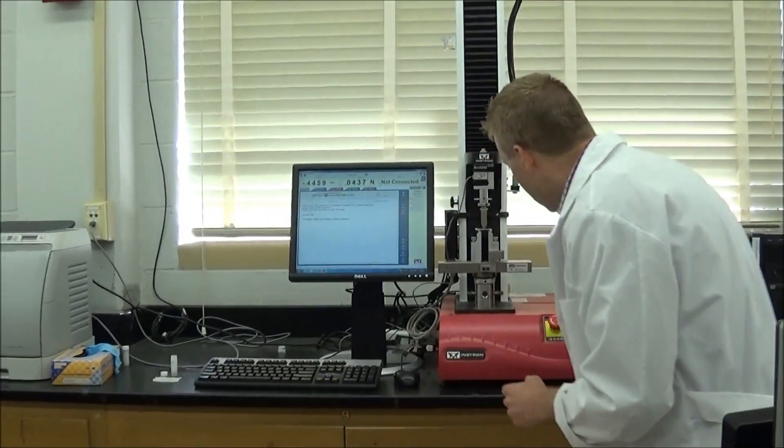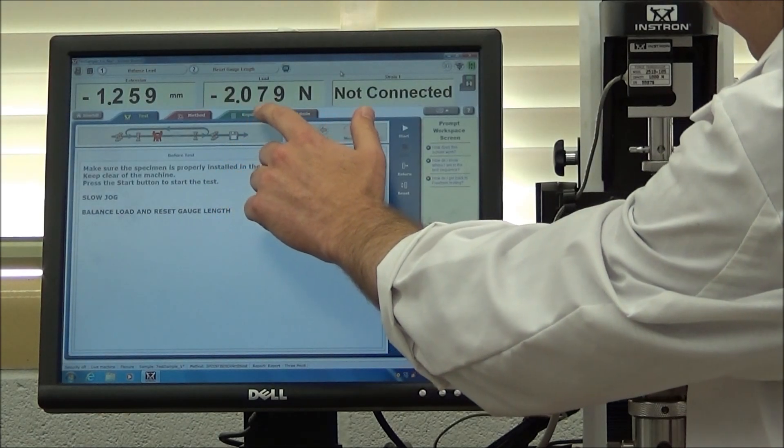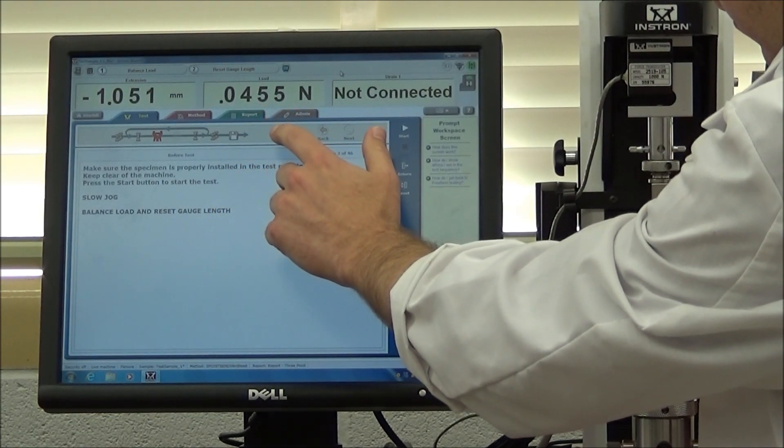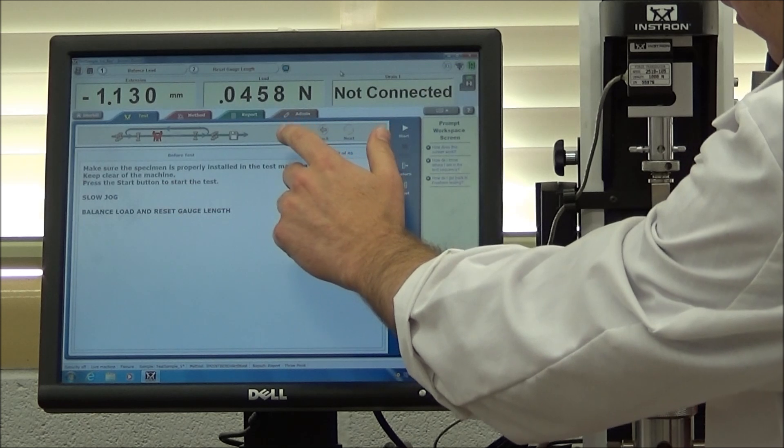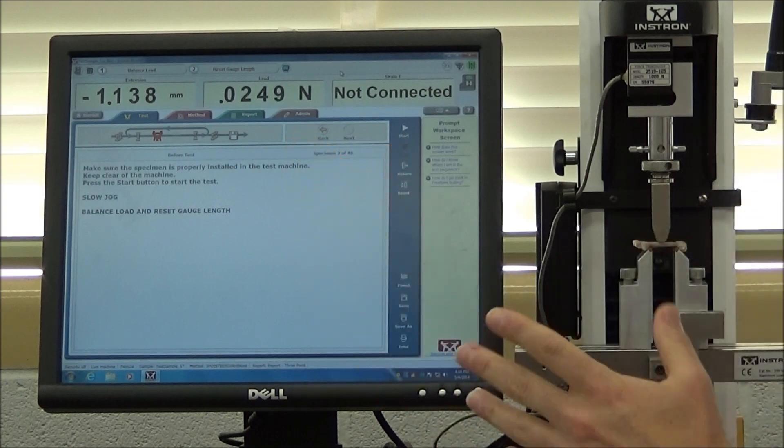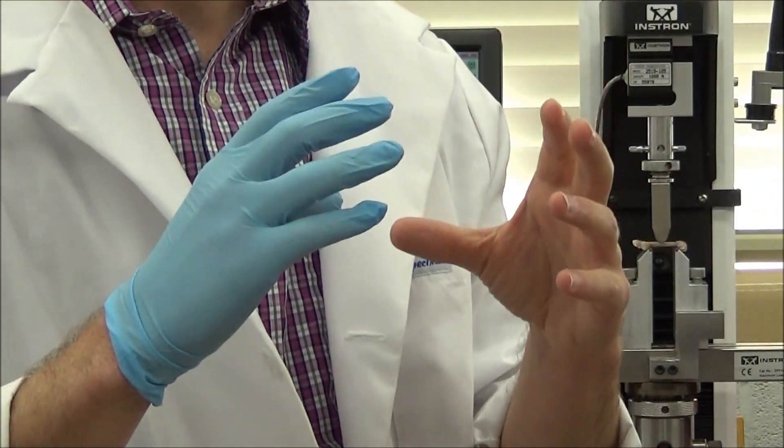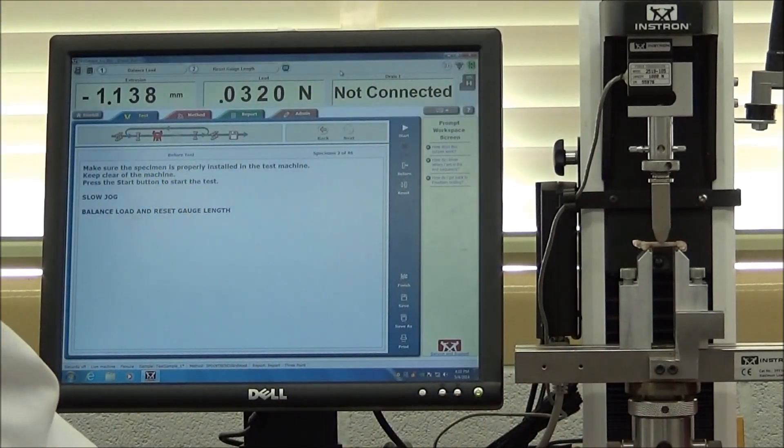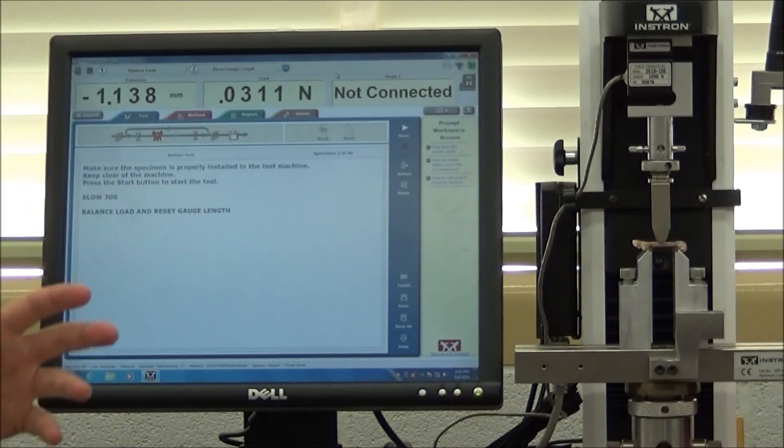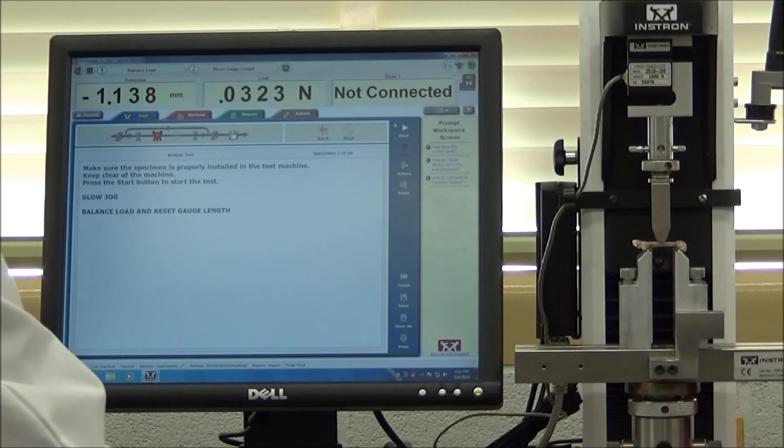So if we go ahead and zoom in close here, we're going to preload this bone to just the slightest bit of preload, about 0.1 newtons. What this does is it just settles the bone into the testing machine. All right, we'll go ahead and run the test. I've already input all the parameters, all the dimensions, and all the lengths and the diameters and everything. So we'll just go ahead and run this test.